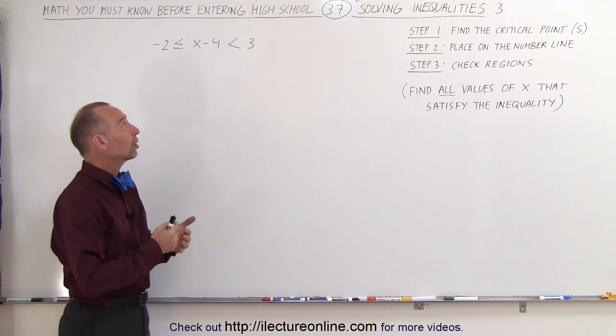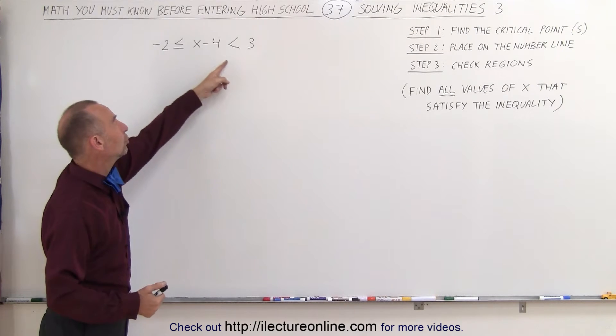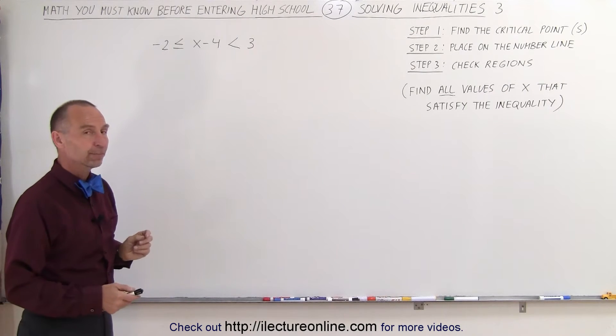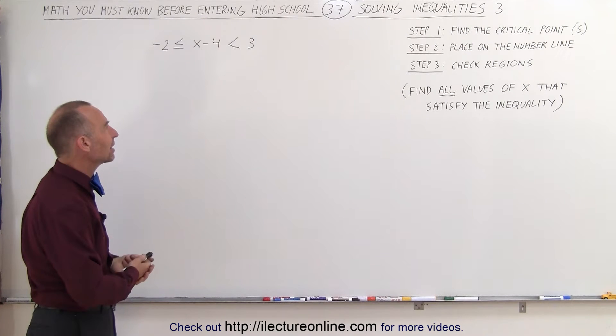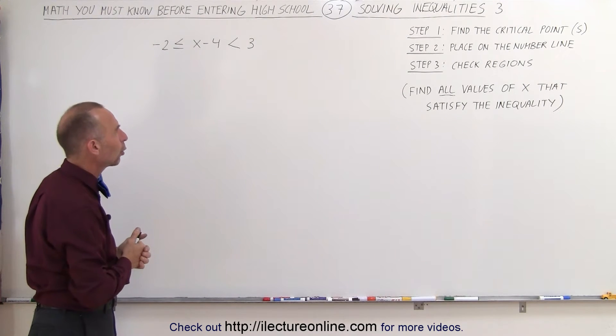Welcome to Electrical Line. Our next inequality is where we place the x minus 4 in between two inequality symbols. How do we deal with that? How do we find all the values for x that satisfy this particular inequality?